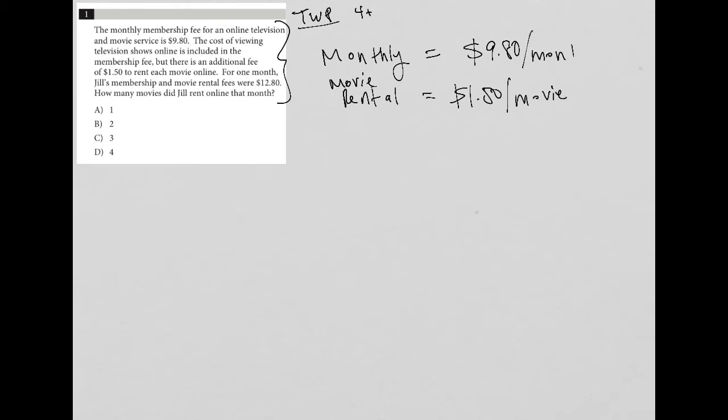This is per month, obviously. And for one month, Jill's membership and movie rental fees were $12.80. So her membership, we'll call M, right? So we'll call this M. Let's call this R. So her membership M, plus her movie rental, which I'm calling R, was equal to $12.80.